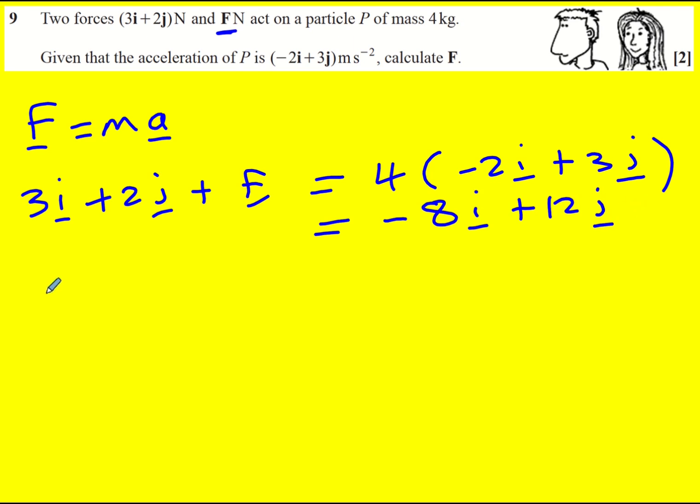Okay so then we can work out F. We can minus 3i from both sides. So we're going to get minus 11i and then minus 2j from both sides. So plus 10j.